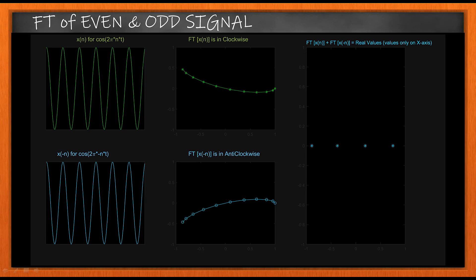Similarly for cosine or an even signal, you have FT of x(n) in clockwise direction. The FT of x(-n) is in anticlockwise direction. Summing these two Fourier transforms, you get values along the x-axis or the real axis, proving that the Fourier transform of an even function is real and the Fourier transform of an odd function is imaginary.